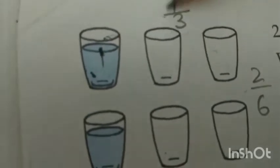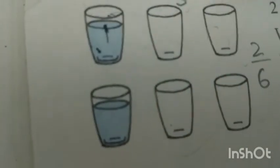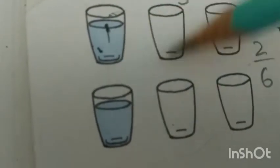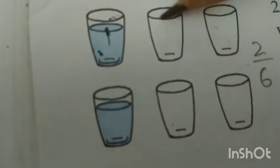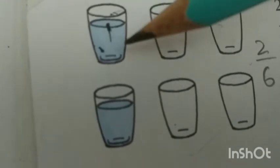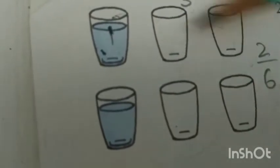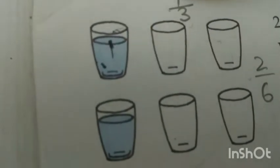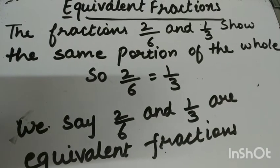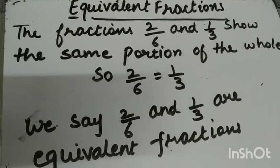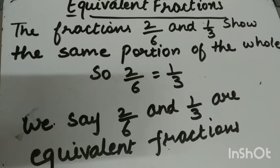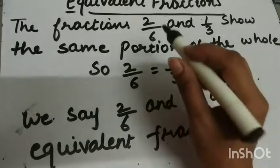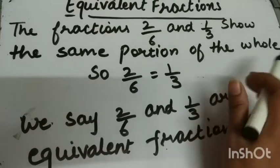If we take six glasses and find the fraction of glasses filled with water, it will be two upon six. And if we take three glasses, the fraction of the glass filled with water is one upon three. So from that figure we say that two by six of the glasses have water, or one by three of the glasses have water. The fractions two by six and one by three show the same portion of the whole.